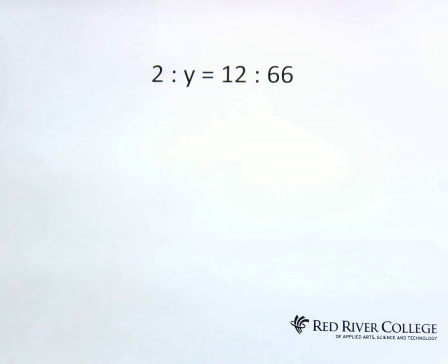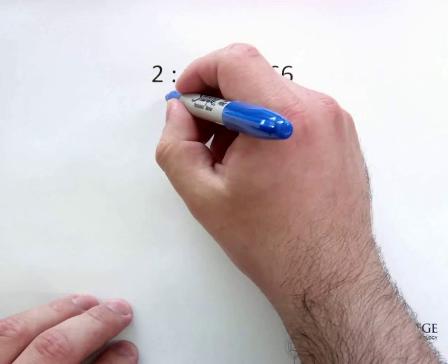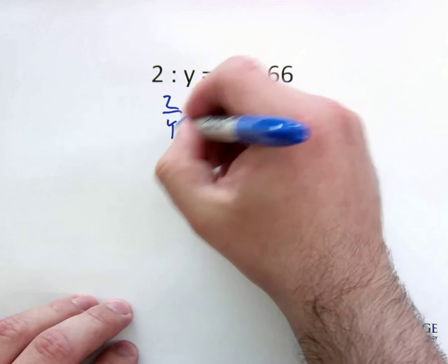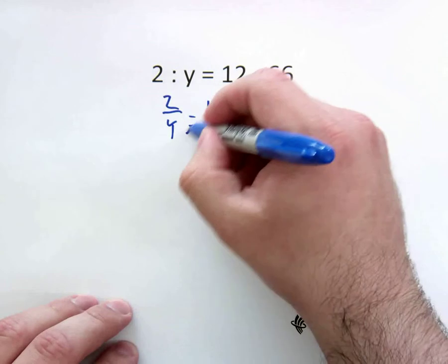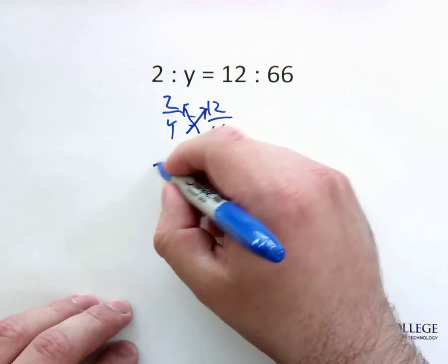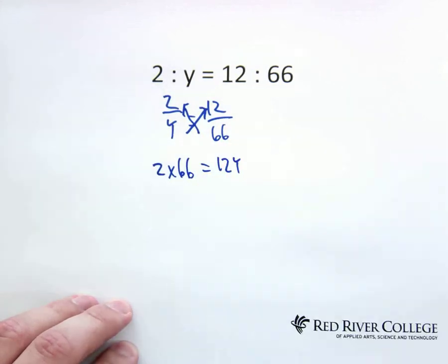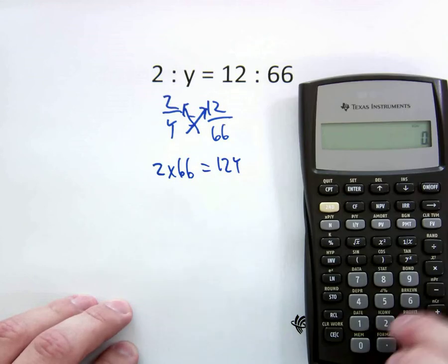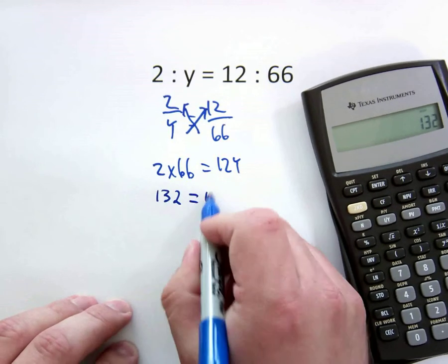Let's try another one, a little bit harder. 2 to y is equal to 12 to 66. So again, start with a fraction. 2 over y is equal to 12 over 66. Cross multiply. So 2 times 66 is equal to 12y. Bring in the calculator for that. 2 times 66 is equal to 132, which is equal to 12y.